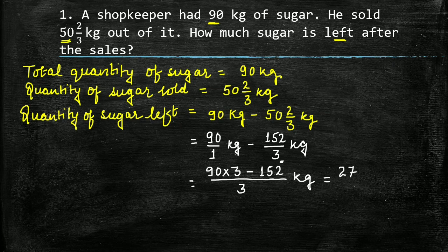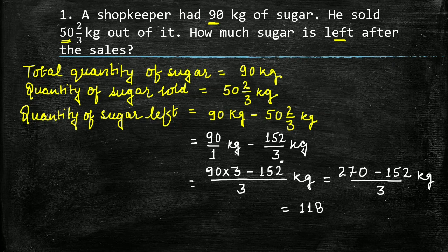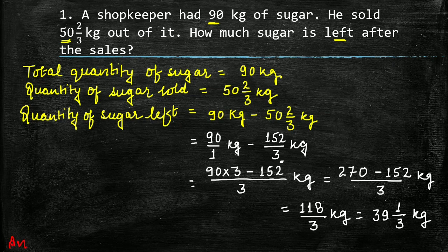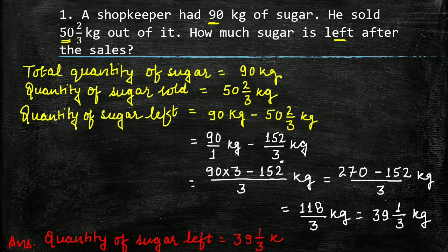90 multiplied by 3 is 270 minus 152 upon 3 kg. 270 minus 152 will be equal to 118, so 118 upon 3 kg. Convert it to a mixed fraction and you will get 39 whole 1 upon 3 kg. The answer is: quantity of sugar left is equal to 39 whole 1 upon 3 kg.